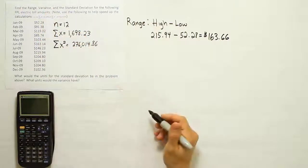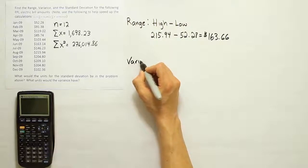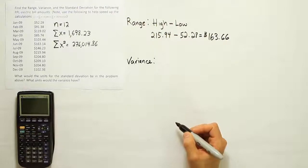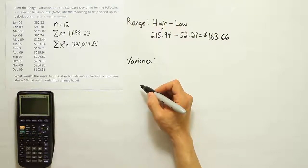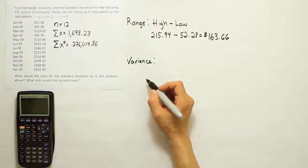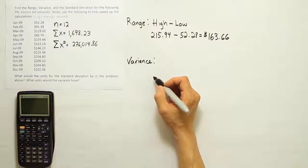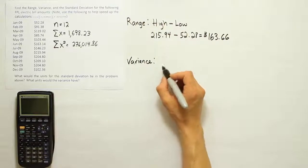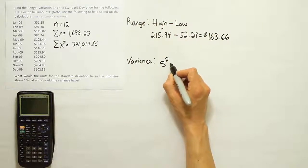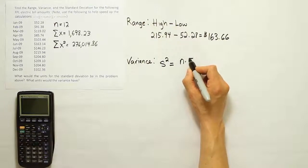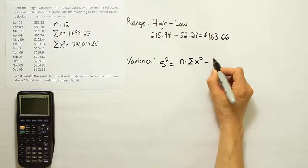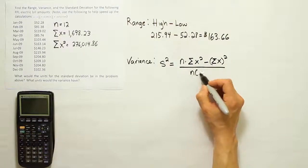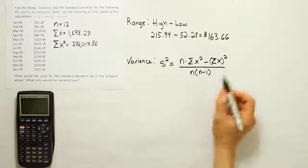Let's calculate the variance next. So to calculate the variance, and for this it'll be the sample variance because obviously this is not all the electric bills for this person or for the entire world, right? So we're not going to see it as the population variance, but rather it'll be the sample variance. If you're only interested in the one year in 2009, then it might be the population variance, but we'll assume it's the sample variance. And it has the formula S squared equals N times the summation of X squared minus the summation of X quantity squared, all divided by N times N minus 1. So that's the formula for variance.